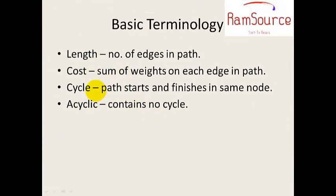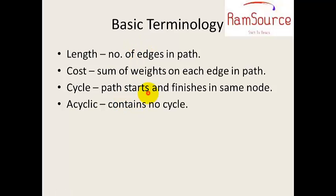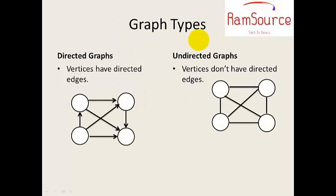Next is cycle. A cycle is a path that starts and finishes at the same node. Subgraph is also part of basic terminology. Types of graphs include undirected graphs and directed graphs. In directed graphs, we have directed edges showing the direction you must travel.